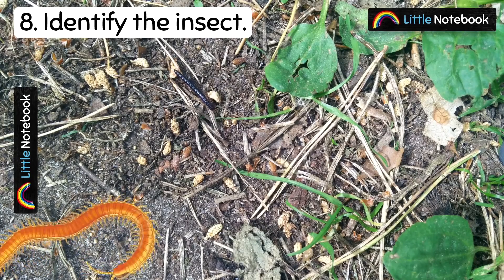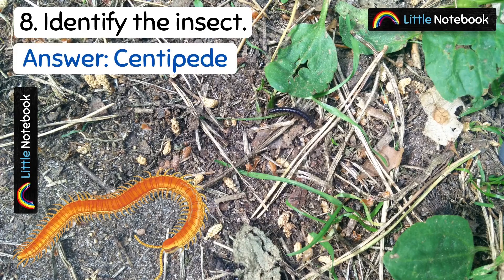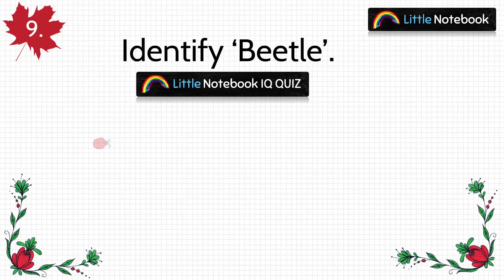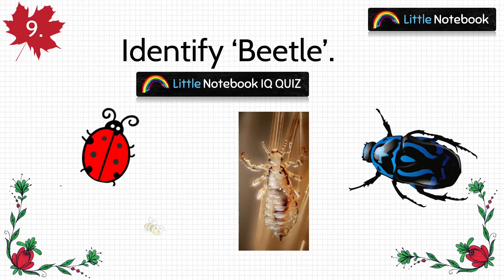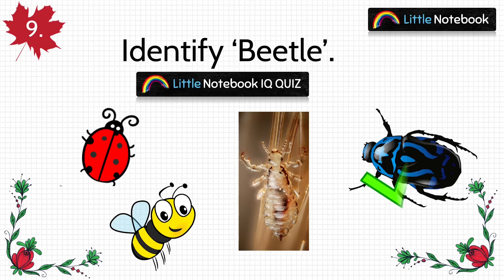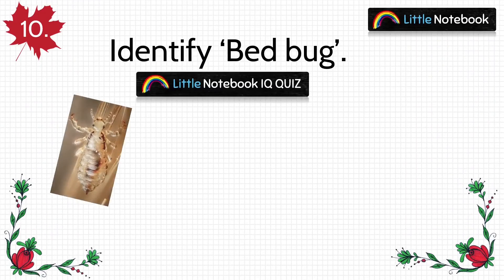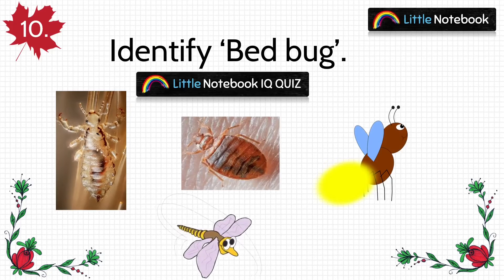Next question is: identify this insect. Answer is centipede. Question 9 is: identify the beetle out of the given insects. This is the beetle. And the last question is: identify the bedbug.